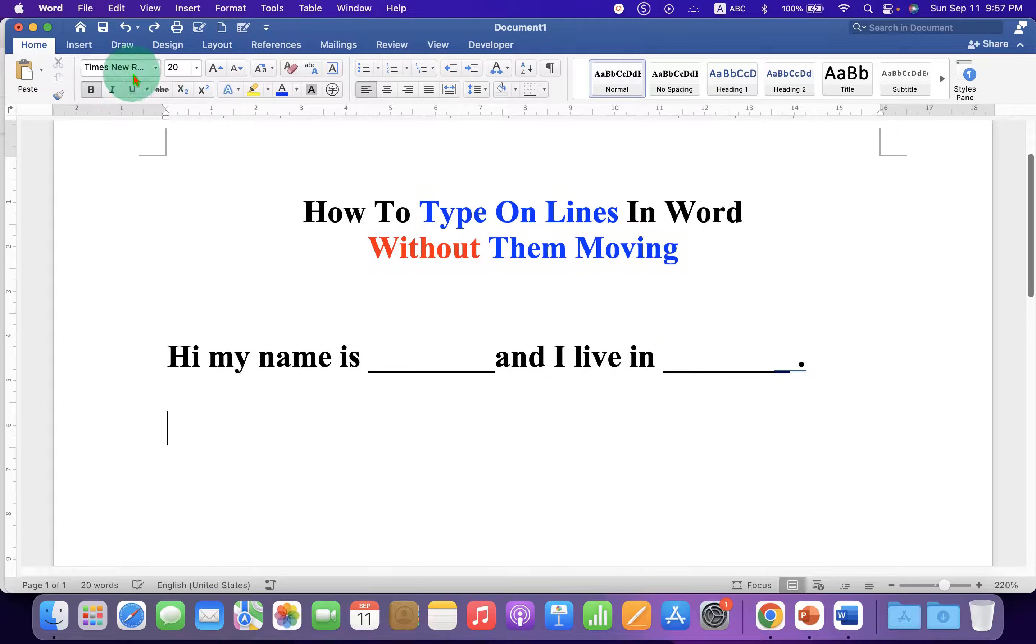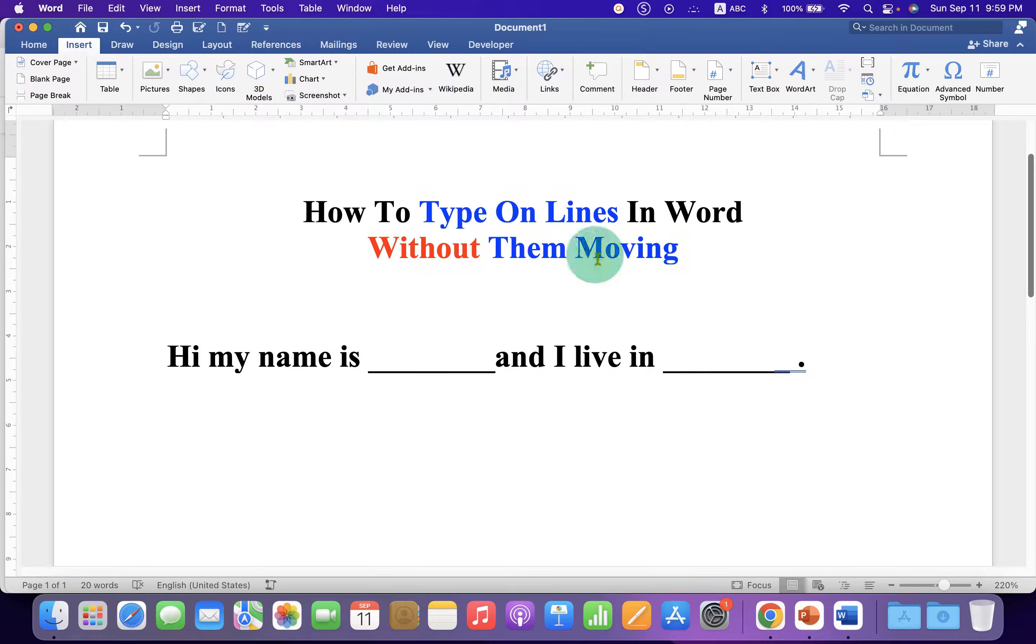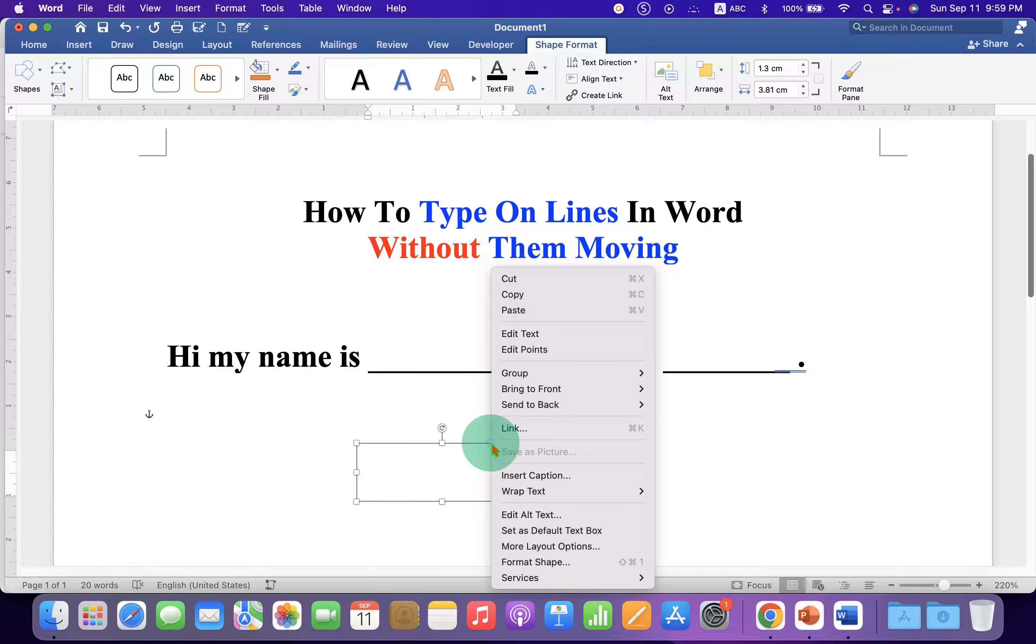what you have to do is go to the Insert tab and select the text box. Now draw the text box, right-click on it, and go to format shapes.